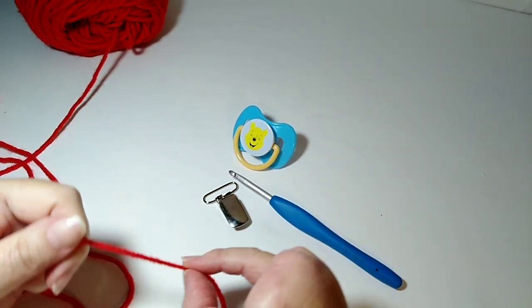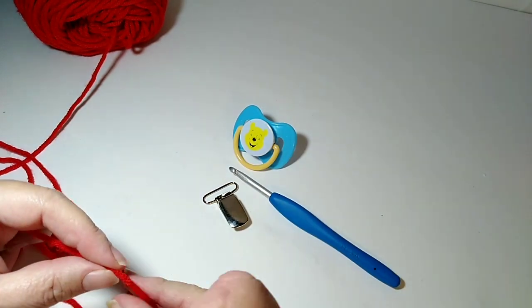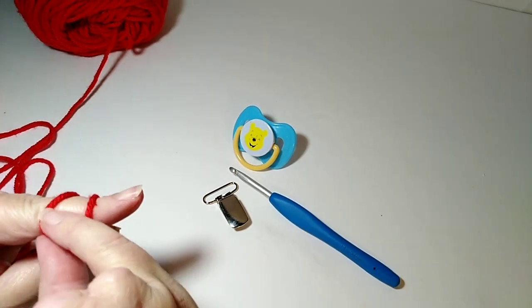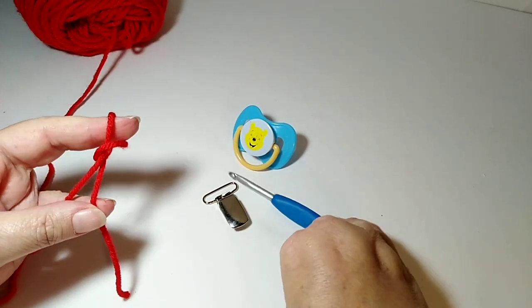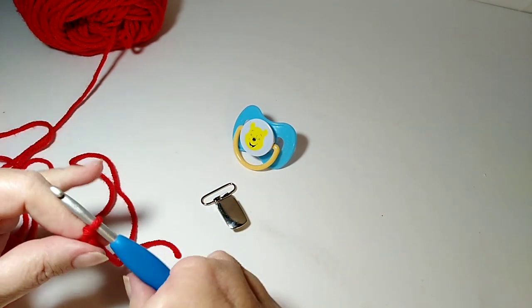If you wanted to use a smaller weight yarn and a smaller hook, that's fine. That's your preference. Just play around with it and figure out what suits you best. Okay, so I am going to make a slip knot and put it on my hook.